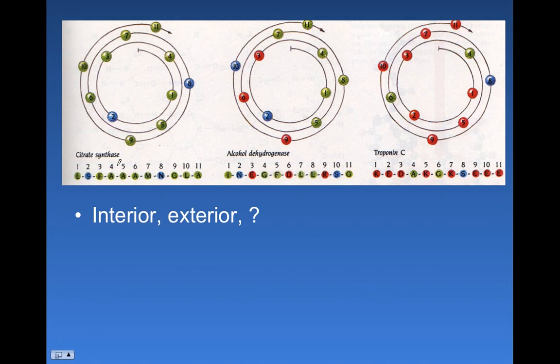Here's an alpha helix from a really important enzyme, citrate synthase, which is in the citric acid cycle. And if we plot the amino acids with a N of 3.6, we see a particular pattern emerging. Now these amino acids are colored green, blue, or red.